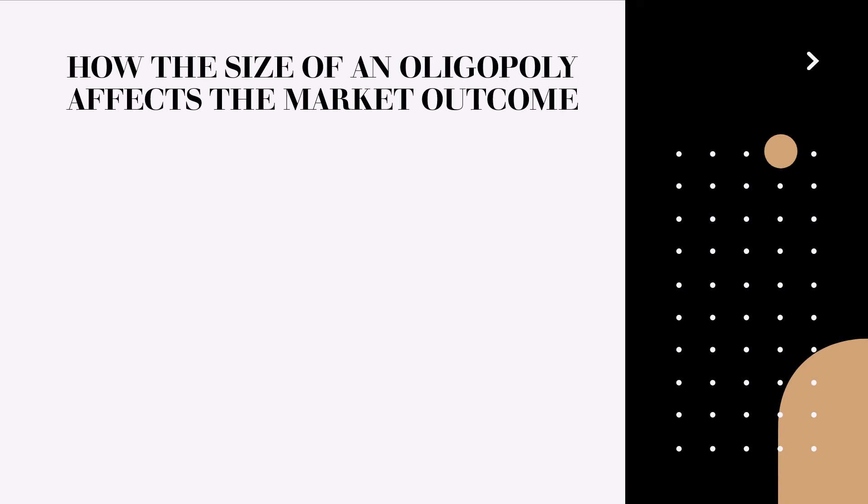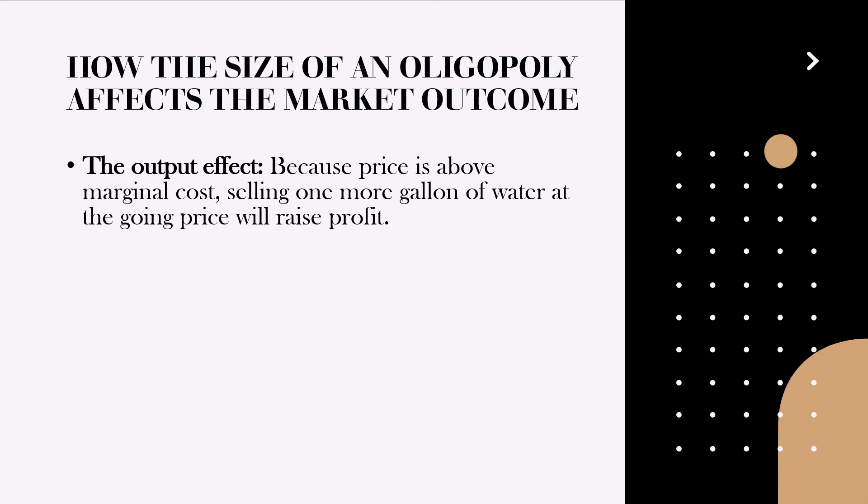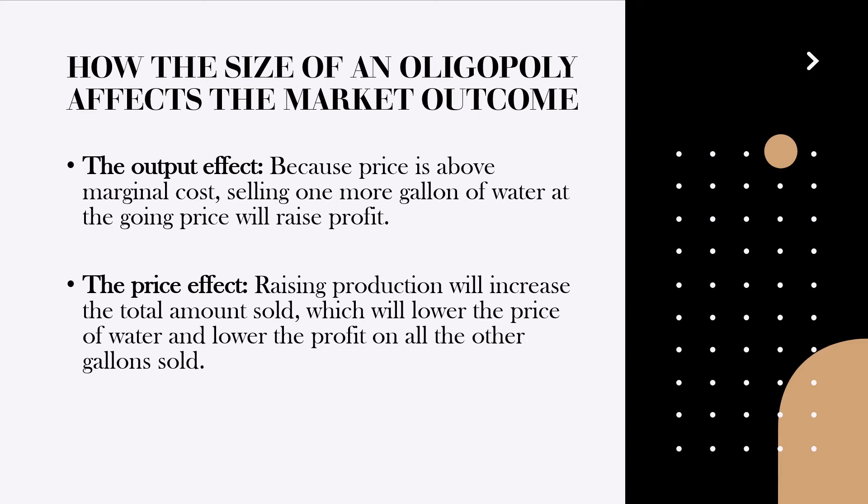Let us try to understand how the size of an oligopoly affects the market outcome. In a duopoly, two effects impact the decisions of Jack and Ann. First is the output effect: because the price is above marginal cost, selling one more gallon at the going price raises profit — this was the situation when Jack considered producing 40 gallons instead of 30. The second is the price effect: raising production increases total amount sold, which lowers the price and lowers the profit on all other gallons sold. If the output effect is larger than the price effect, the owner will increase production; if the price effect is larger, they will not.